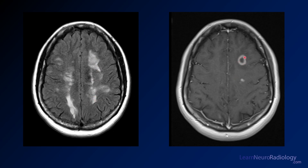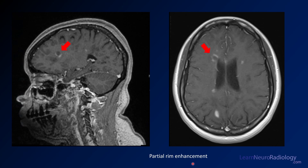On post-contrast, we see ring-enhancing lesions plus a few additional dots of enhancement. An important finding to recognize is the incomplete rim of enhancement — peripheral enhancement that doesn't go all the way around, a broken rim. This is almost classic for demyelinating disease. When you see that, even if the lesion is big and mass-like and looks like a tumor, think about tumor-effacing demyelination.